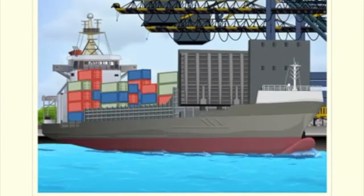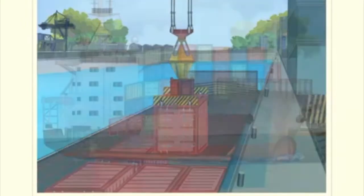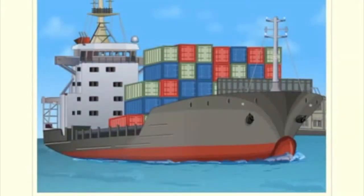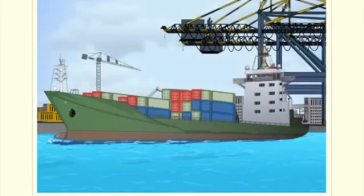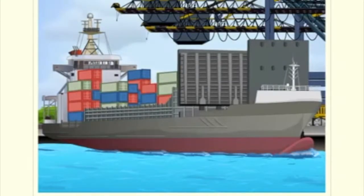Feeder ships are small ships serving small ports from a major port or operating in coastal waters and short sea routes. These come in sizes of 450 TEUs to 900 TEUs. Most feeder ships are geared ships — that is, they have their own cranes for loading and unloading — and are used for inland waters, up rivers, canals, etc.